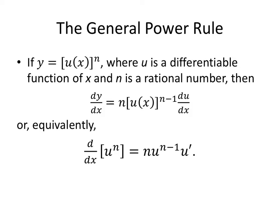After we see this general power rule: if y equals u(x) all to the n power, where u is a differentiable function of x and n is a rational number, then we think of u(x) as the inside function and 'to the power of n' as the outside. The derivative is n times u to the n minus one, leave the inside alone, then multiply by the derivative of the inside — du/dx or u prime. The general power rule is a specific example of the chain rule.